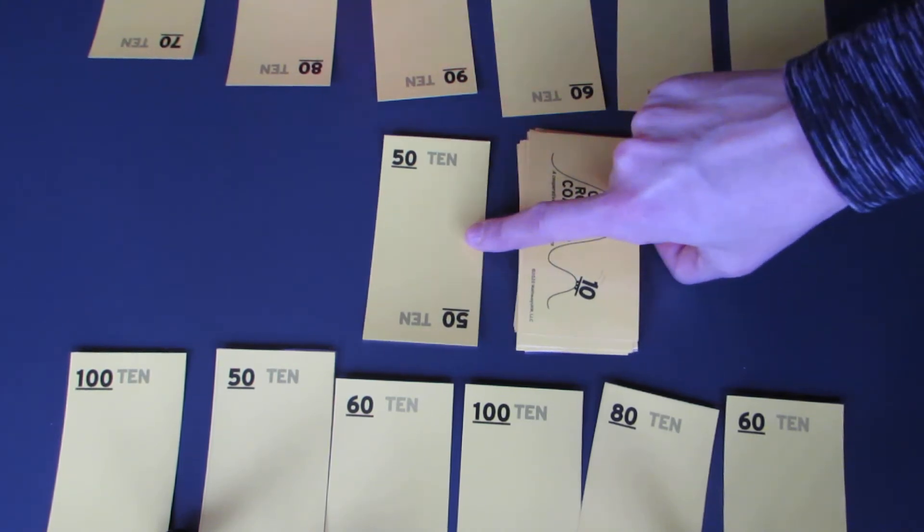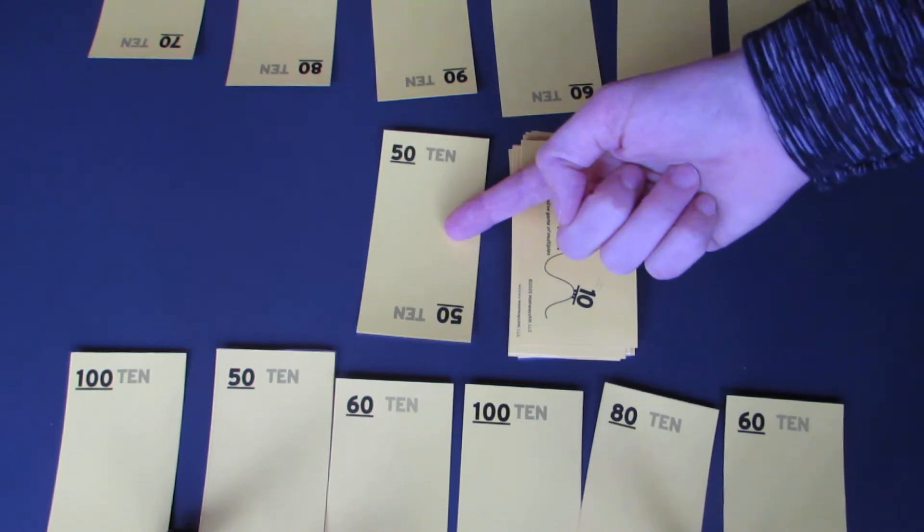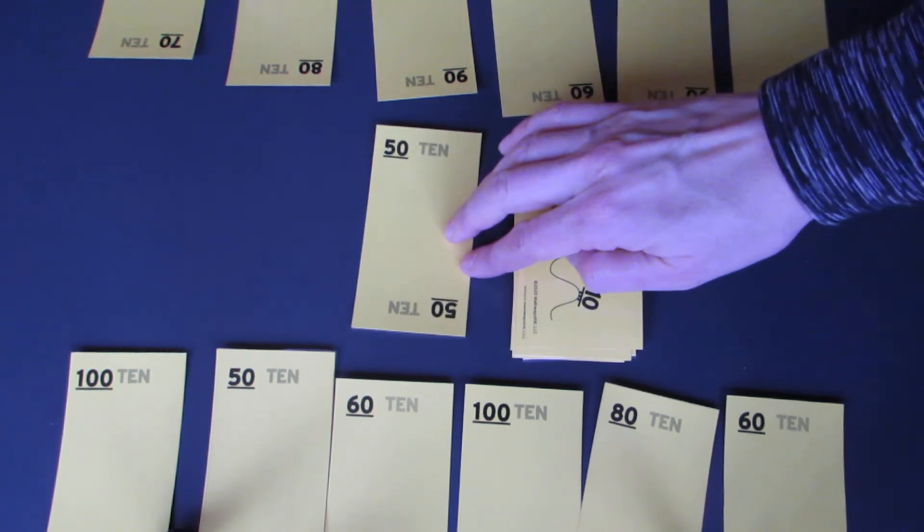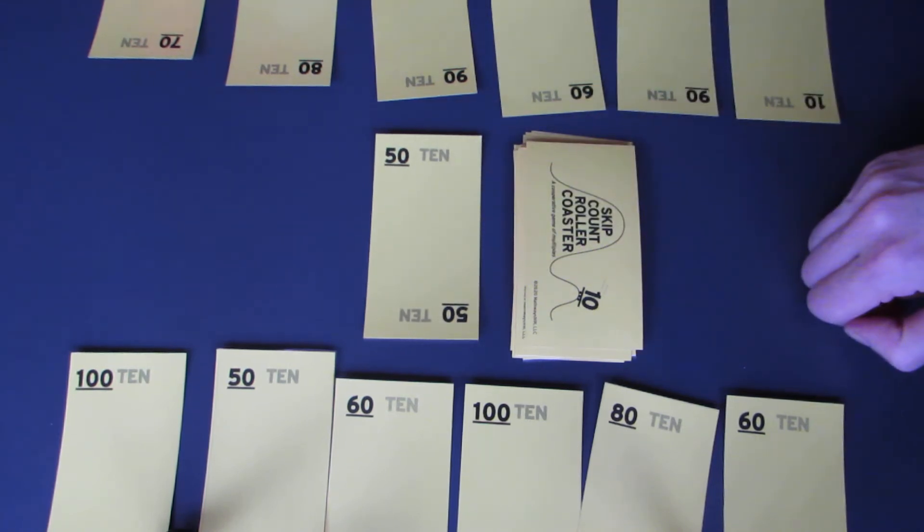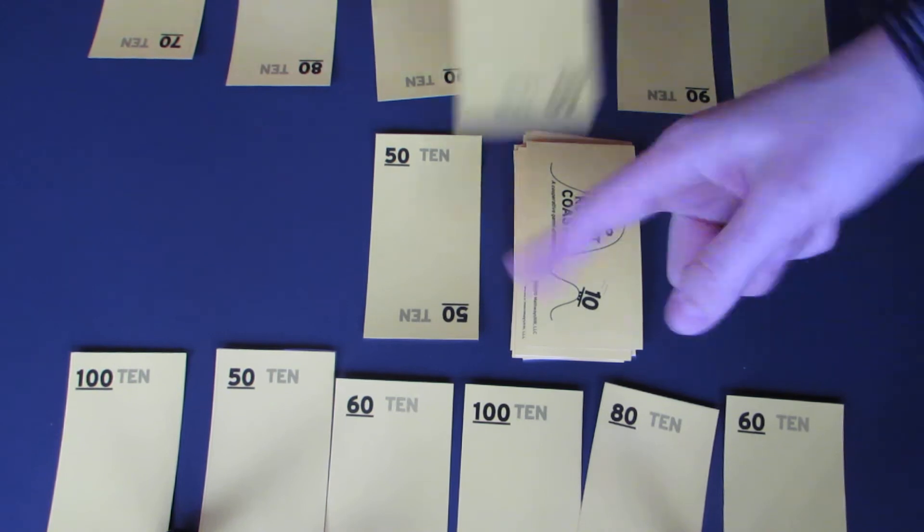So the first card we picked when turned over here was a 50. We can go 10 more or 10 less than 50. Do we have anything that's 10 more, like a 60, or 10 less, like a 40? We have a 60. Okay, play a 60.